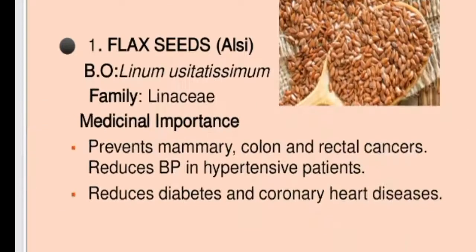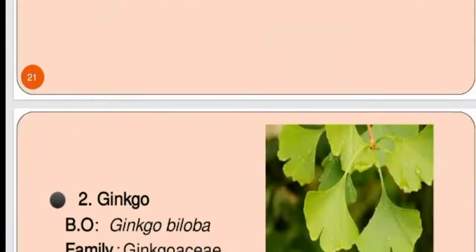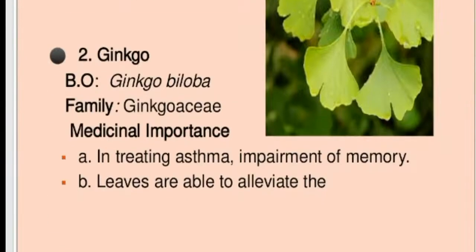Herbs as functional foods include flax seeds, with biological origin Linum usitatissimum from the Linaceae family. Flax seeds prevent mammary, colon, and rectal cancers, and reduce diabetes, coronary heart disease, and hypertension. Another herb is ginkgo — Ginkgo biloba from the Ginkgoaceae family — used in treating asthma and impairment of memory.